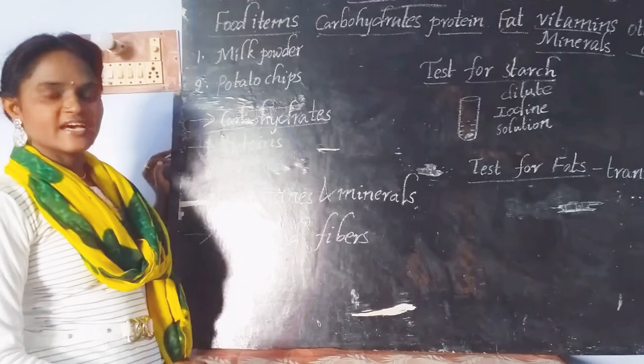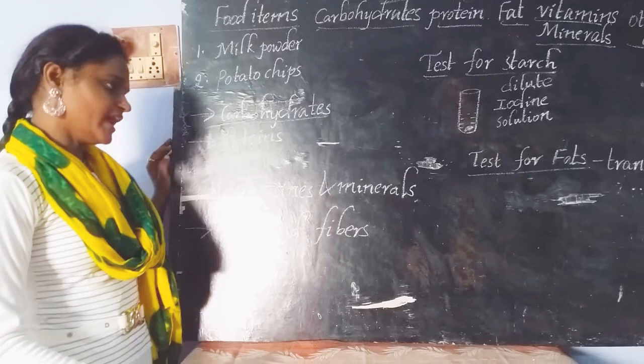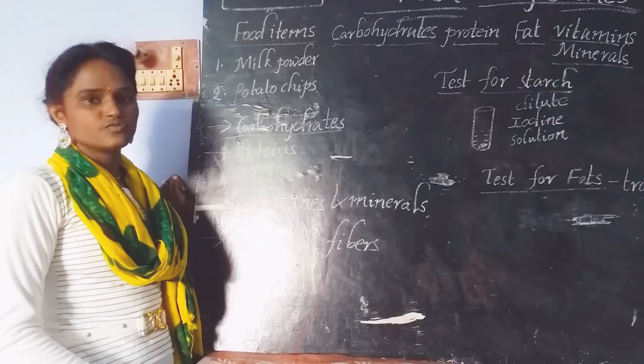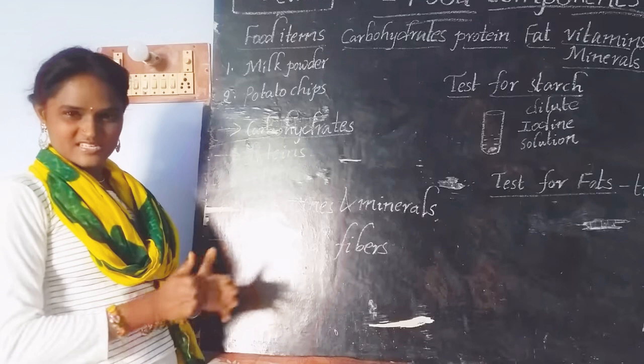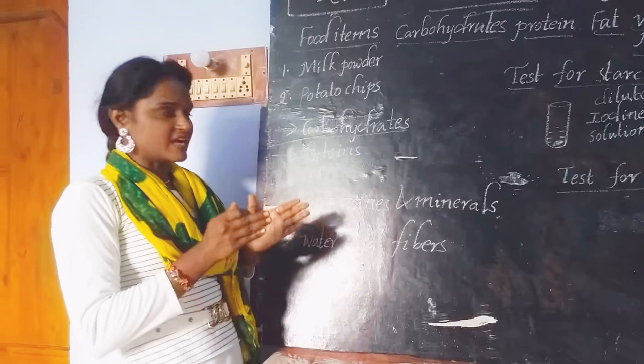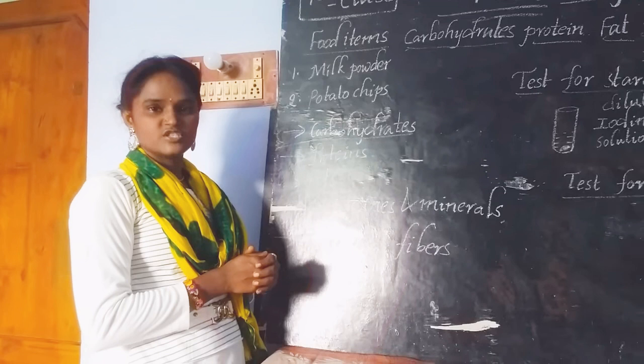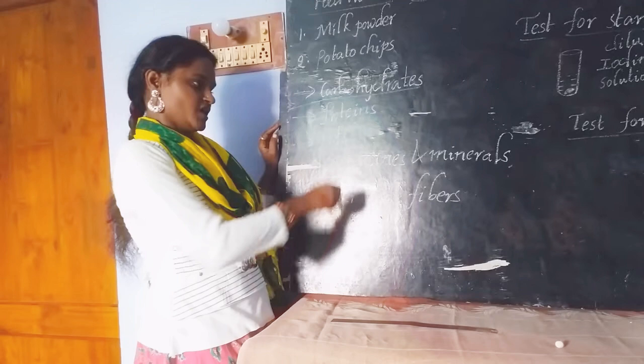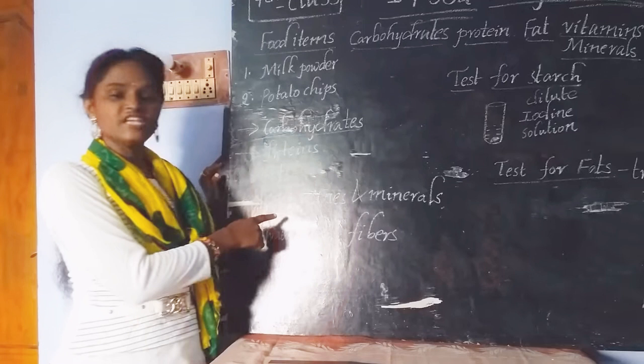Carbohydrates are also called energy-giving food. Along with carbohydrates, fats are also called energy-giving food. If we talk about proteins, these are body-building food. If you want to get more muscles like a bodybuilder, then you have to take more food containing proteins — like eggs, chicken, mutton, milk, fish — everything. That is why we call proteins body-building foods.